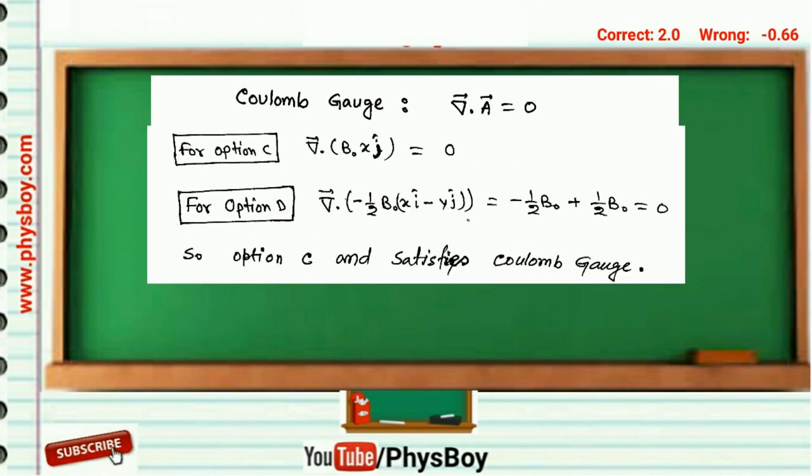So the vector potentials given in options C and D satisfy the Coulomb gauge condition.